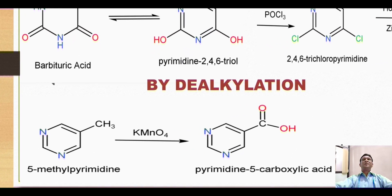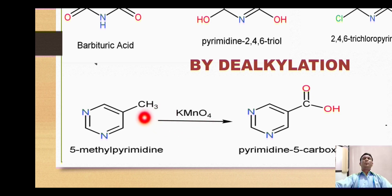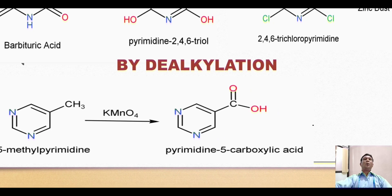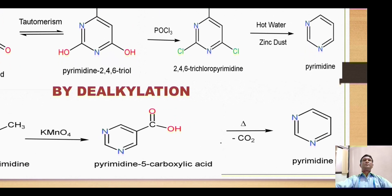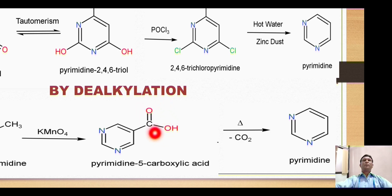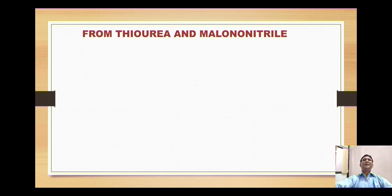The next synthesis involves decarboxylation of a pyrimidine derivative. The starting material is 5-methylpyrimidine, which is reacted with the oxidizing agent potassium permanganate. The methyl group undergoes oxidation to form the corresponding carboxylic acid — in this case, pyrimidine-5-carboxylic acid. When this carboxylic acid derivative is heated, it will liberate carbon dioxide (CO₂), and the hydrogen will remain available on the carbon to form the pyrimidine ring.